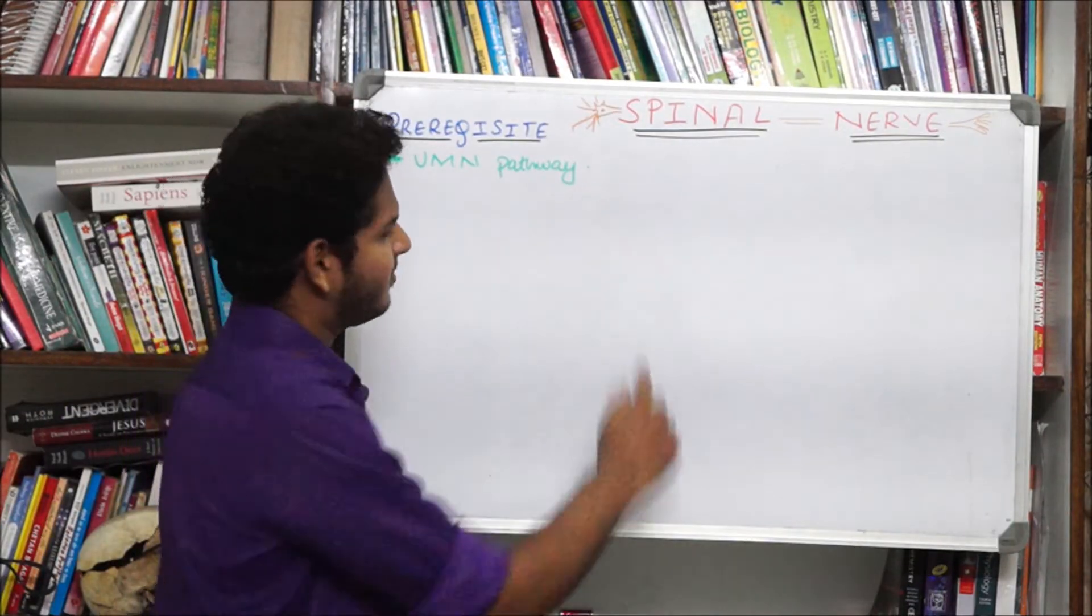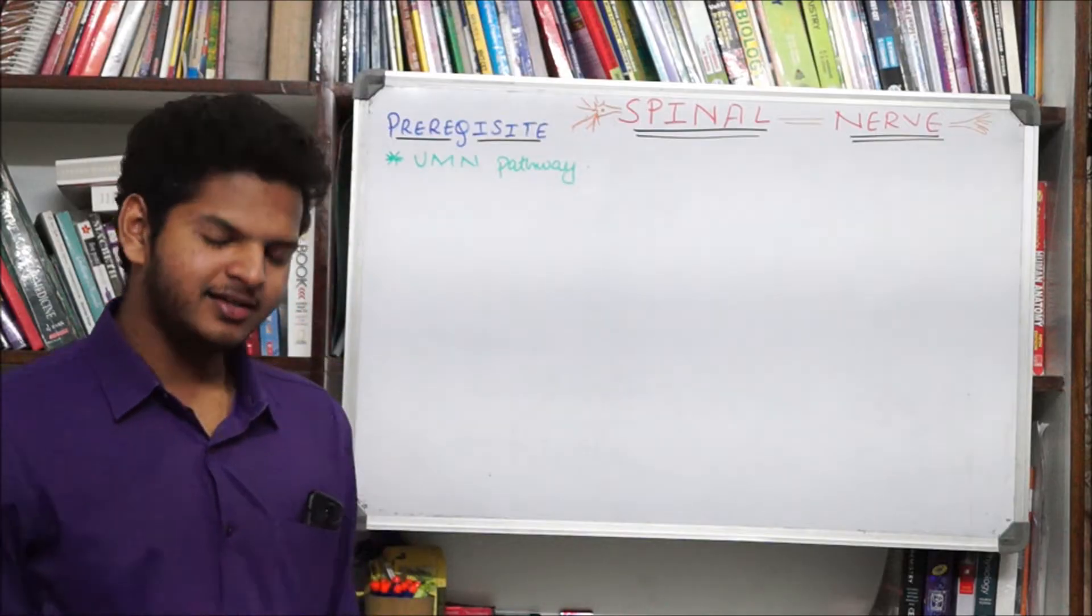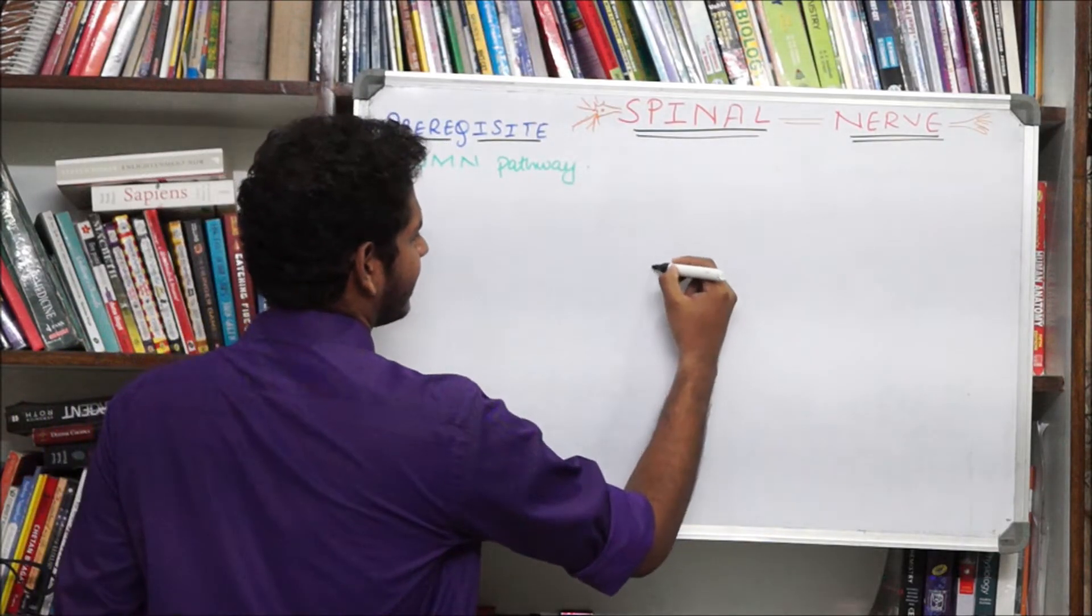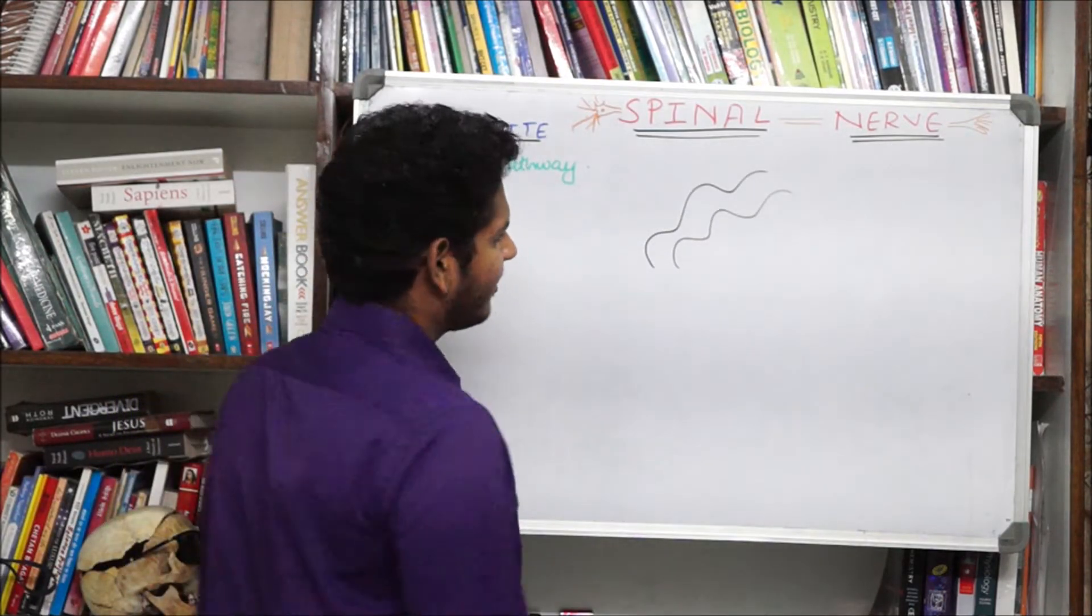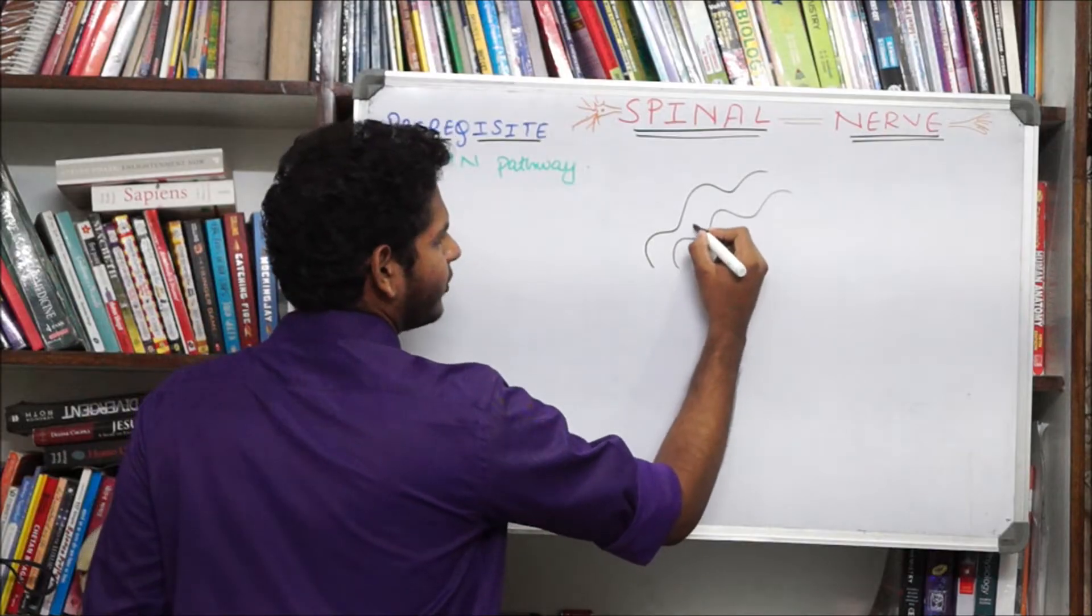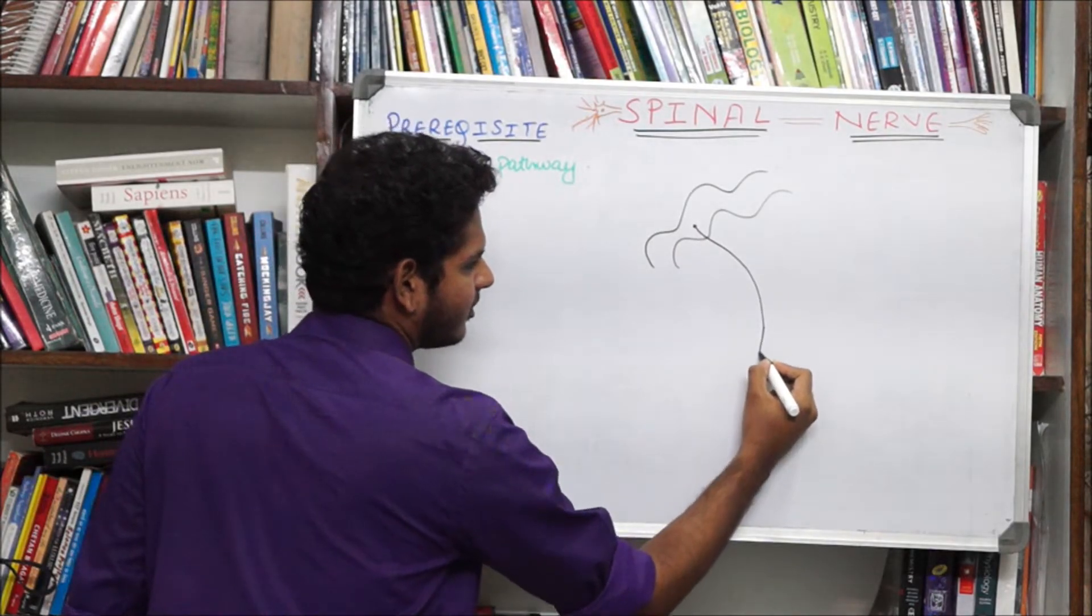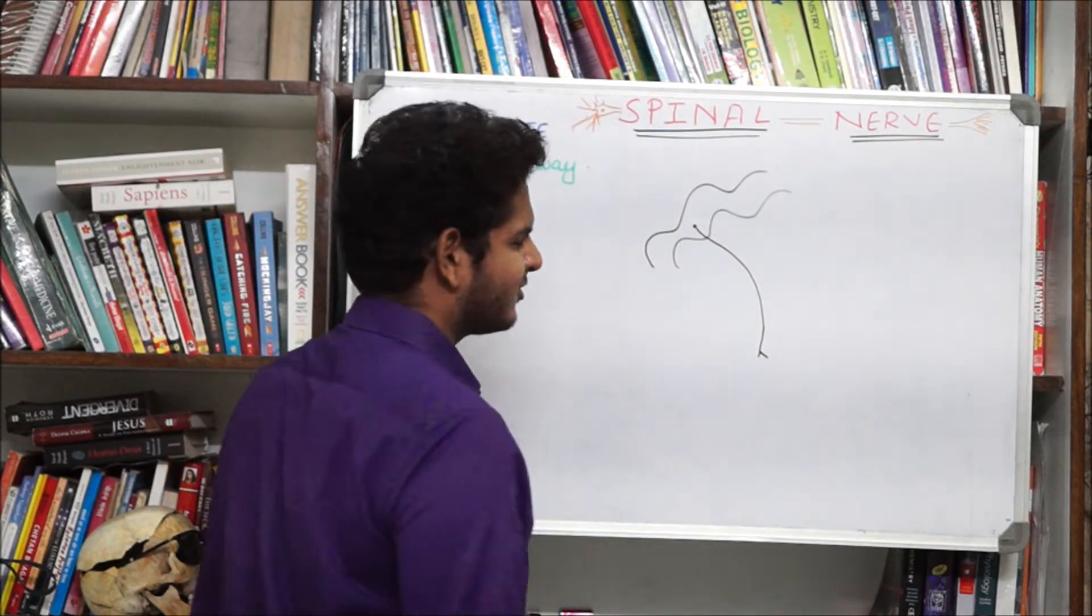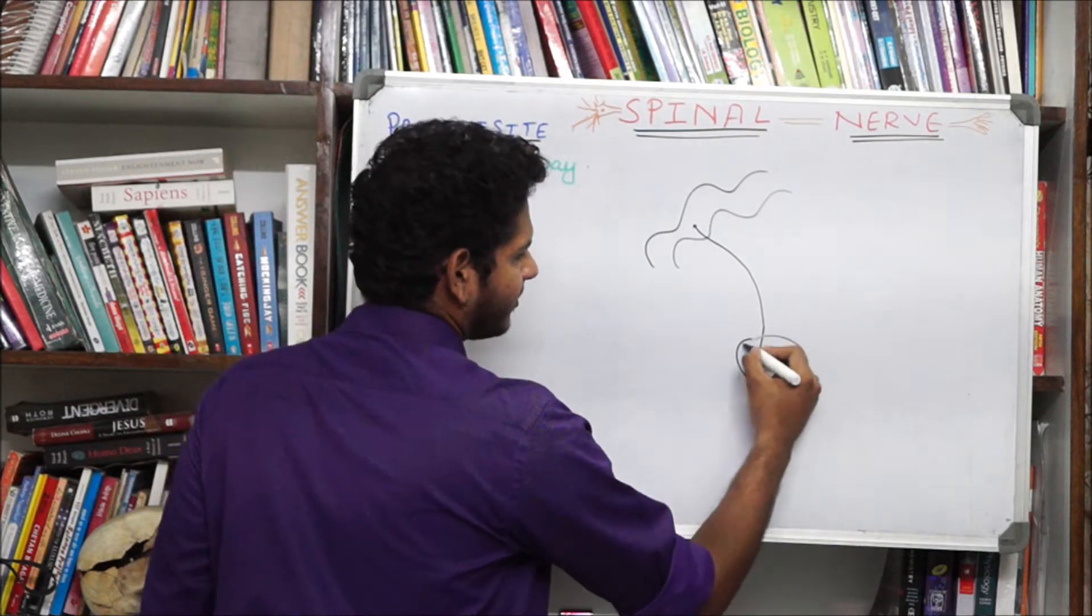So first let's discuss about the upper motor neuron pathway. I am going to tell you what it is. It's basically the brain communicating with the spinal cord. So here we have the cortex of the cerebrum. What happens is that neurons originate from here, go down. It's a very rough idea. Don't take it too seriously. Neurons go down, they go to the spinal cord.